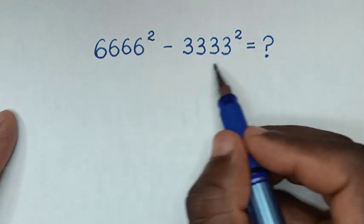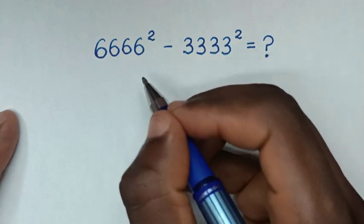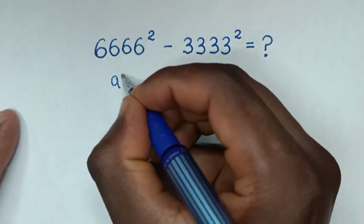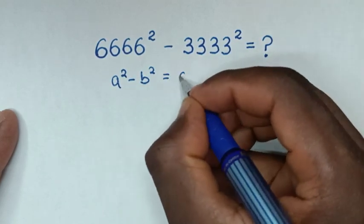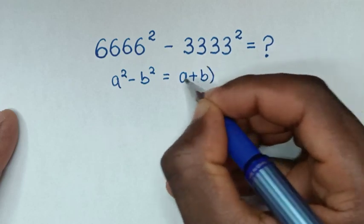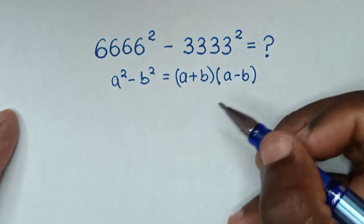This math problem is in the form of a perfect square, so we'll apply the difference of squares formula: a squared minus b squared equals (a plus b) times (a minus b).